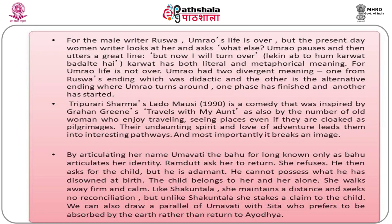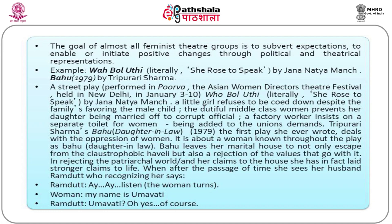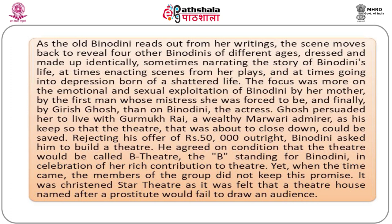The wheelchair is a metaphor for Ghosh, whose theatre almost crippled after Vinodhani left. As the old Vinodhani reads from her writings, scenes reveal four other Vinodhani's of different ages, sometimes narrating her life story, sometimes enacting scenes from her plays. The focus was on the emotional and sexual exploitation of Vinodhani by her mother, the first man whose mistress she was forced to be, and Girish Ghosh. Ghosh persuaded Gurmukh Rai, a wealthy Marwari admirer, to finance the theatre. Rejecting his offer of 50,000, she was asked to build a theatre on condition it be called B Theatre — B standing for Vinodhani — but members did not keep the promise, feeling a theatre named after a prostitute would fail to draw an audience.